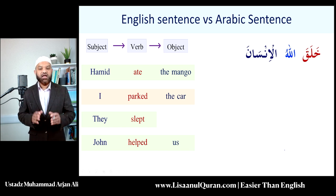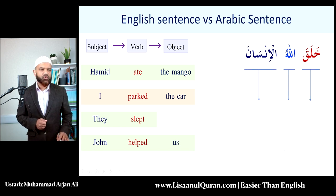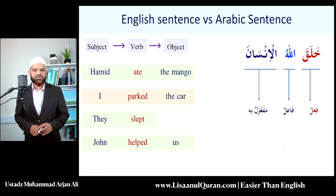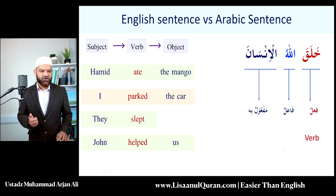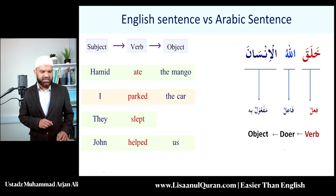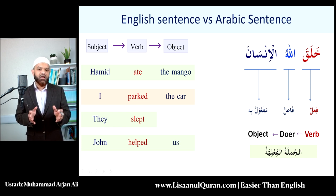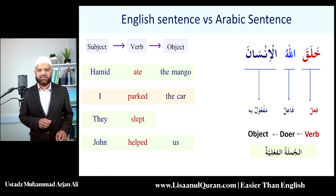In Arabic we have a lot of flexibility. We've seen that we can begin a sentence with an ism. Here is an example of beginning a sentence with a verb, which we do not normally do in English. Please note these three terms: the fi'l (verb), the fa'il (doer), and the maf'ul bihi (object), if required. This is how the verbal sentence is ordered in Arabic — the distinction between Arabic and English. We are beginning with a verb, and this is the subject of today's lesson. We begin with the past tense.